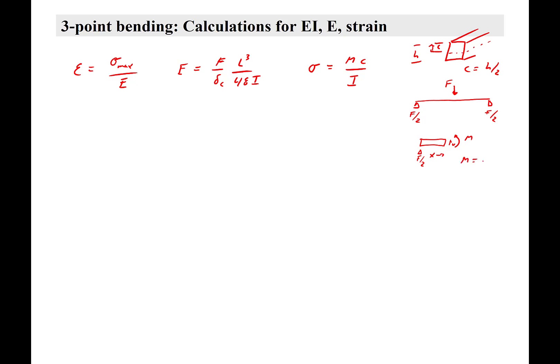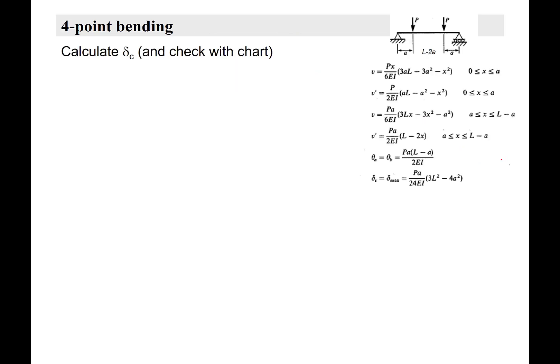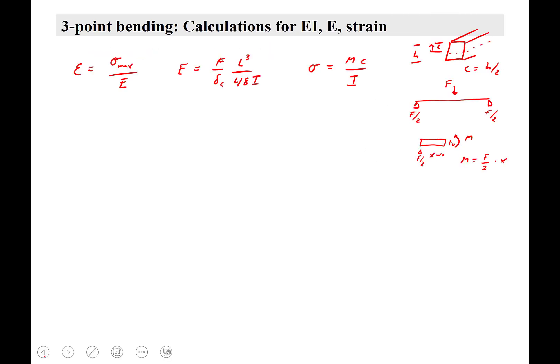So, moment equals the distance, F over 2, times x. It's maximum at the center, and what I want to know is the maximum. So, M max equals F times L over 2, the center, over 2, which is F L over 4.